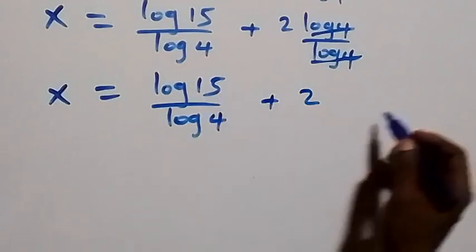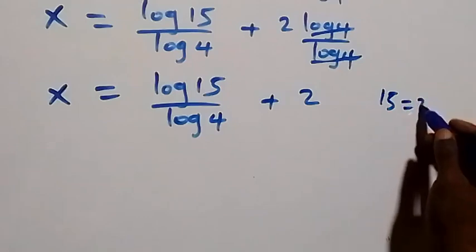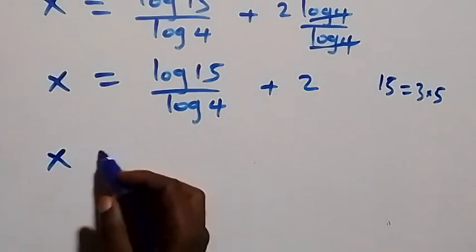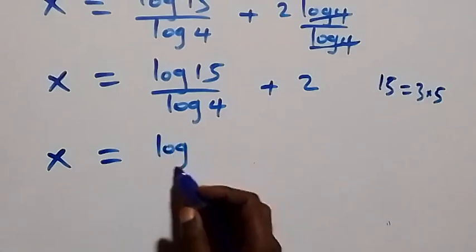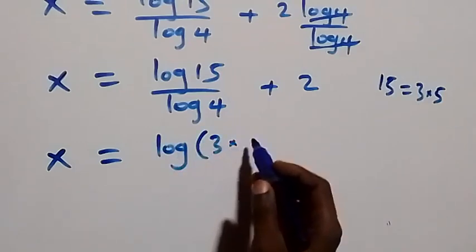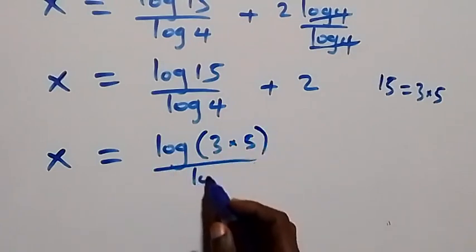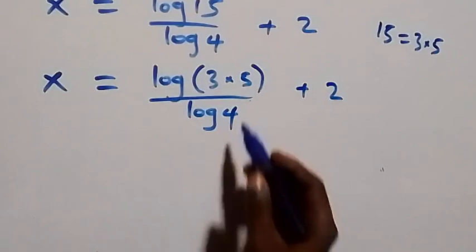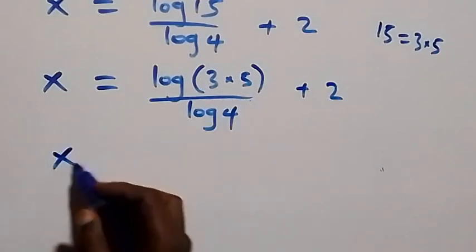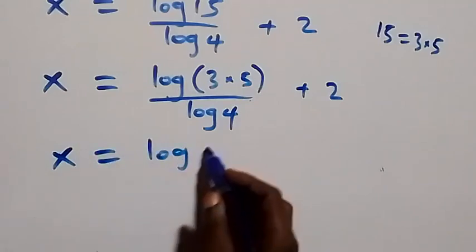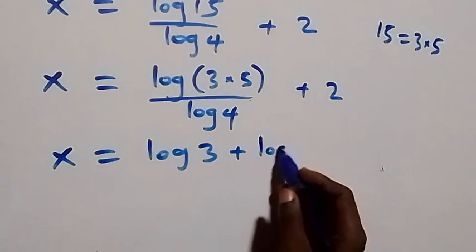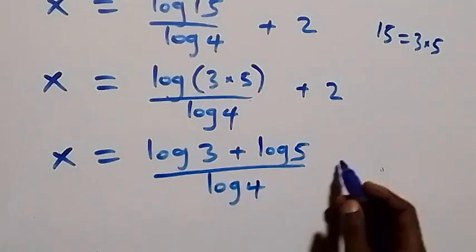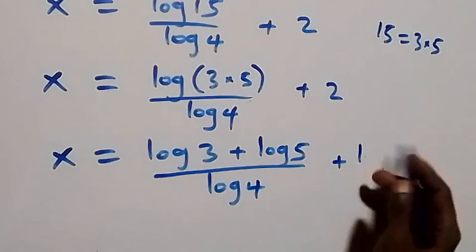Further, we can rewrite 15 here as 3 times 5. That is, what we have becomes x equals to log of 3 times 5 over log 4, then plus 2. Then also from the law of logarithm we separate these and we have x equals to log 3 plus log 5 over log 4, plus 2.